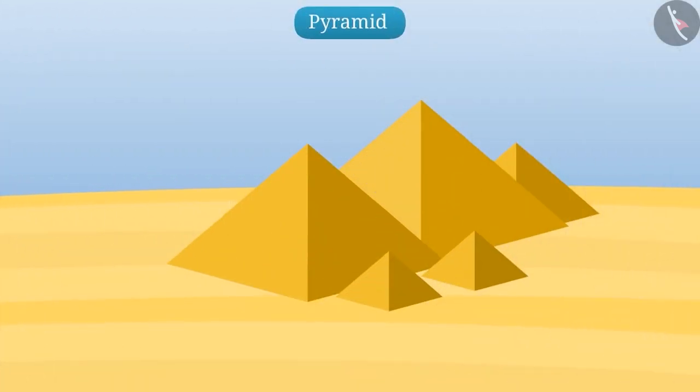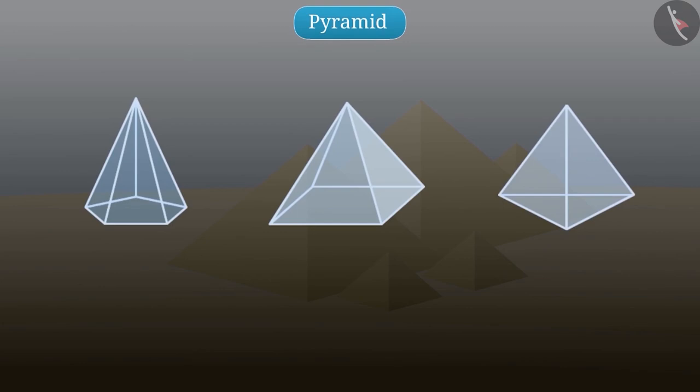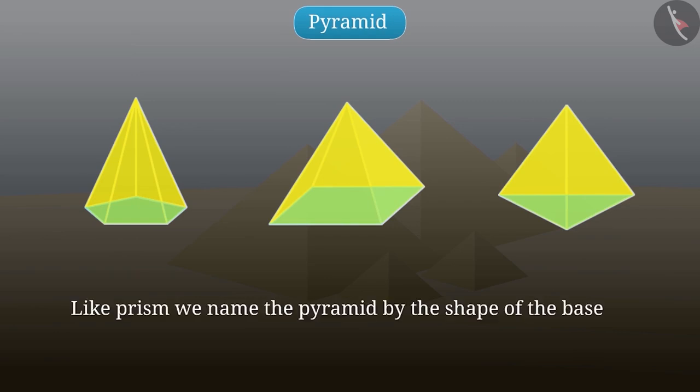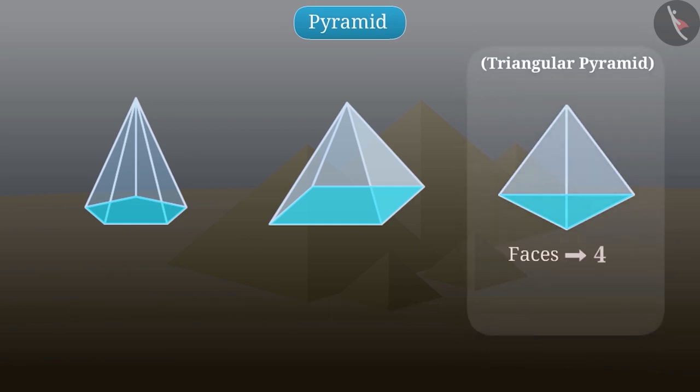You must have seen pictures of the famous Egyptian pyramids. If you look carefully, you will see their shape in this way. As you can see, in this shape the base can be the shape of any polygon. But the rest of the faces are triangular. We call such a shape a pyramid. Like prism, we name the pyramid by the shape of the base. As the base of this pyramid is triangular, so it is a triangular pyramid. Here you can see that this pyramid has four faces, six edges and four vertices.